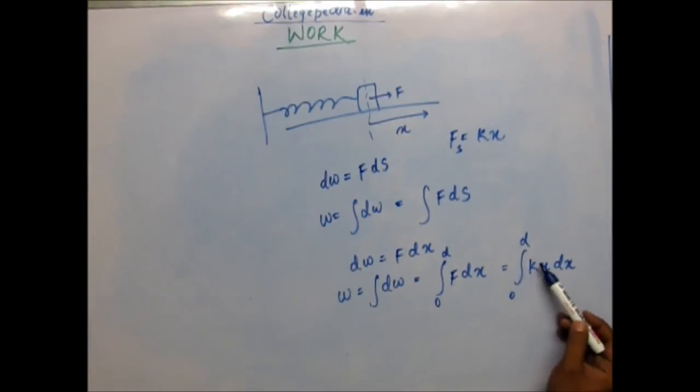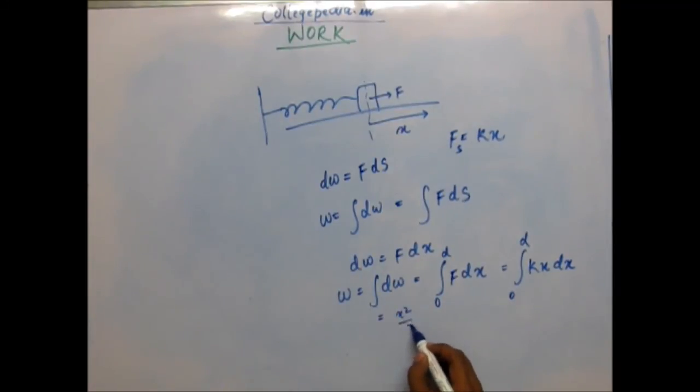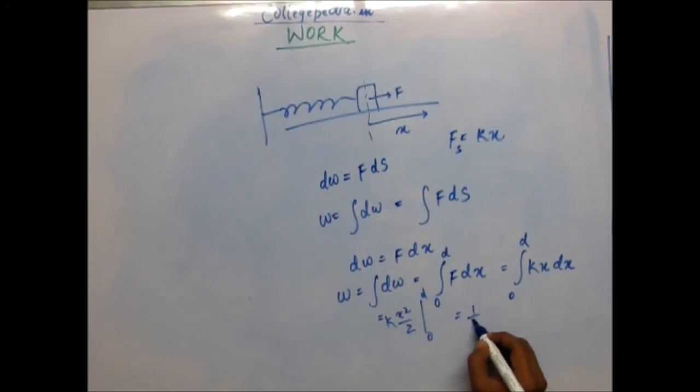We have to integrate this. K is a constant that will come out of integration, and integration of x dx is x squared by 2. Put the limit 0 to d, that will come out as half k d squared. This is the work done by you when you displace a block from the position at which the spring is relaxed to a displacement d, working against the spring. This work that you have done is the amount of energy that you will lose.